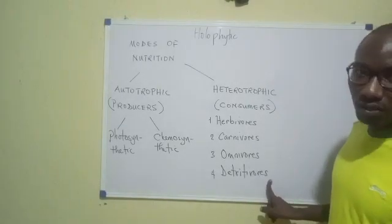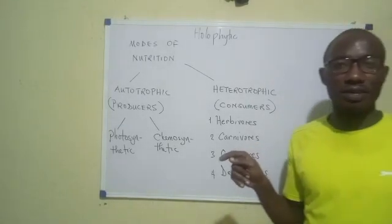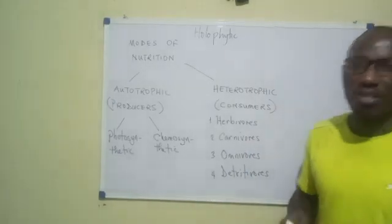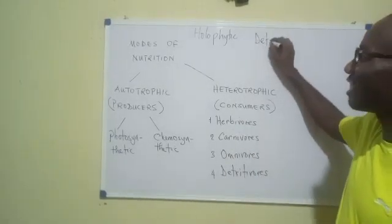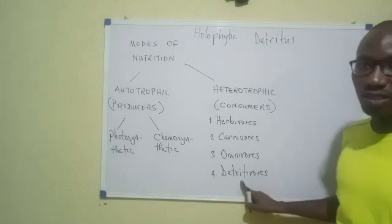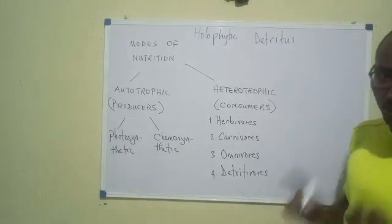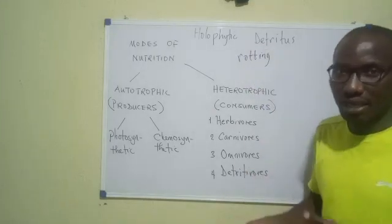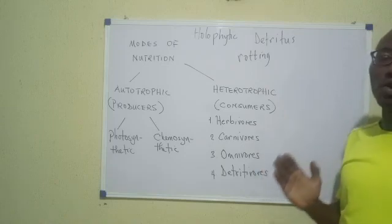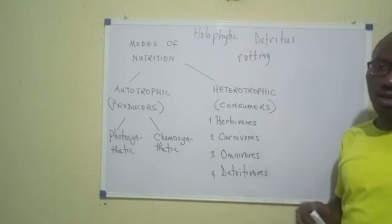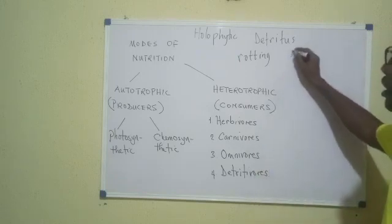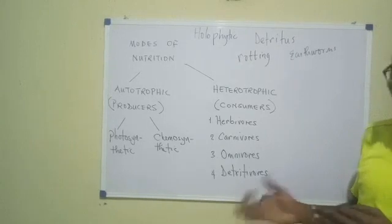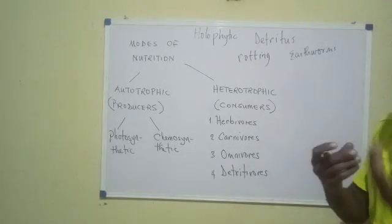Then we have the detritivores. Detritivores feed on plant and animal materials when they are dead — that is, dead remains of plants or animals. Such dead remains are called detritus. So detritus feeders are detritivores; they don't feed on living materials, they feed on dead, decaying organic matter. They can include things like earthworms. Earthworms are very good examples of detritivores — they feed on dead organic matter and consume it whole in large amounts.